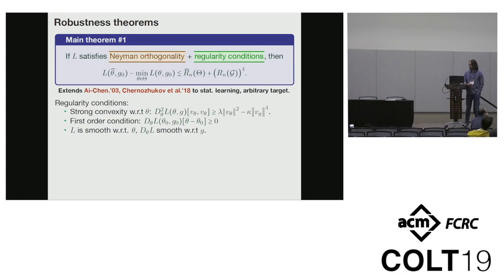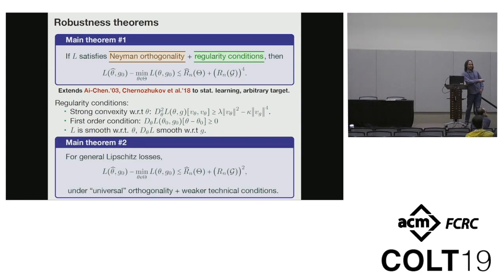Of these assumptions, the strong convexity is probably the least benign. We have a second theorem that removes this. If you have a general Lipschitz loss and it satisfies a slightly stronger version of orthogonality, but otherwise weaker technical conditions, you get a similar guarantee.